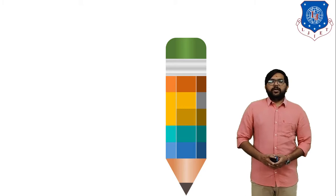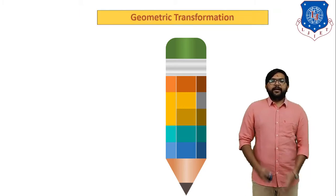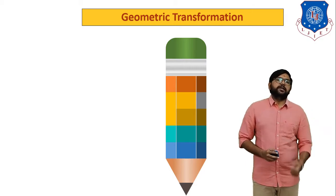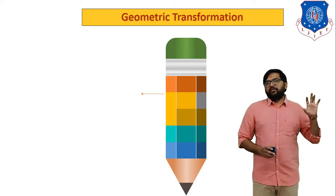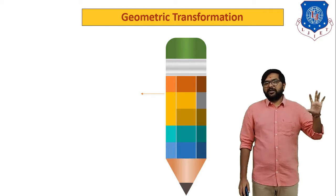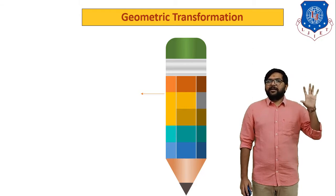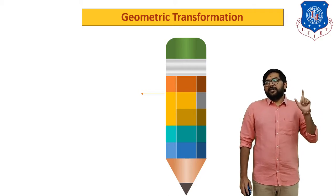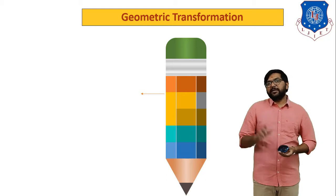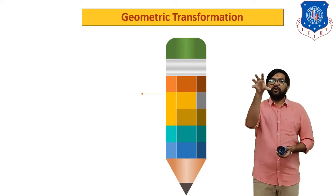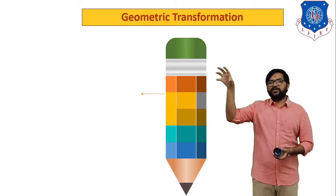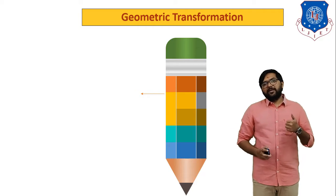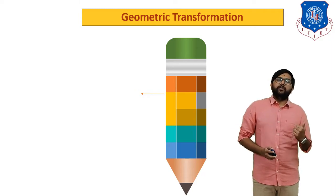Hello students, myself Miwan Pudya from M.G. Institute of Engineering and Technology. In the last session we started a new chapter: Geometric Transformation. In geometric transformation we discuss 5 processes — translation, rotation, reflection, scaling, and shearing. In the last session we discussed translation: moving an object from one position to another, and we solved one numerical based on that.